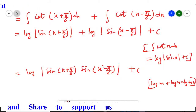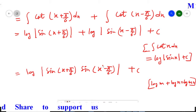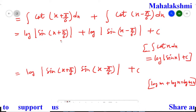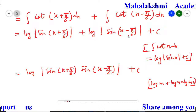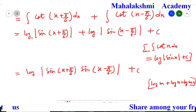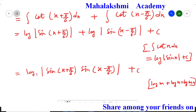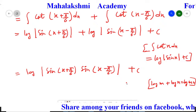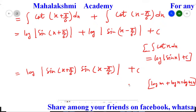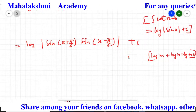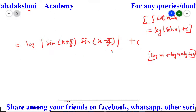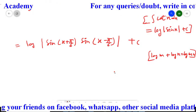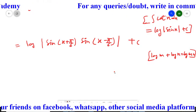So that is our answer. Both logs are in addition, so we use the formula log m + log n = log(mn). Therefore: log|sin(x + π/6) · sin(x - π/6)| + c. This complete expression behaves as m and this complete as n, so log m + log n becomes log(mn) — they come into multiplication. That is our final answer for this question.